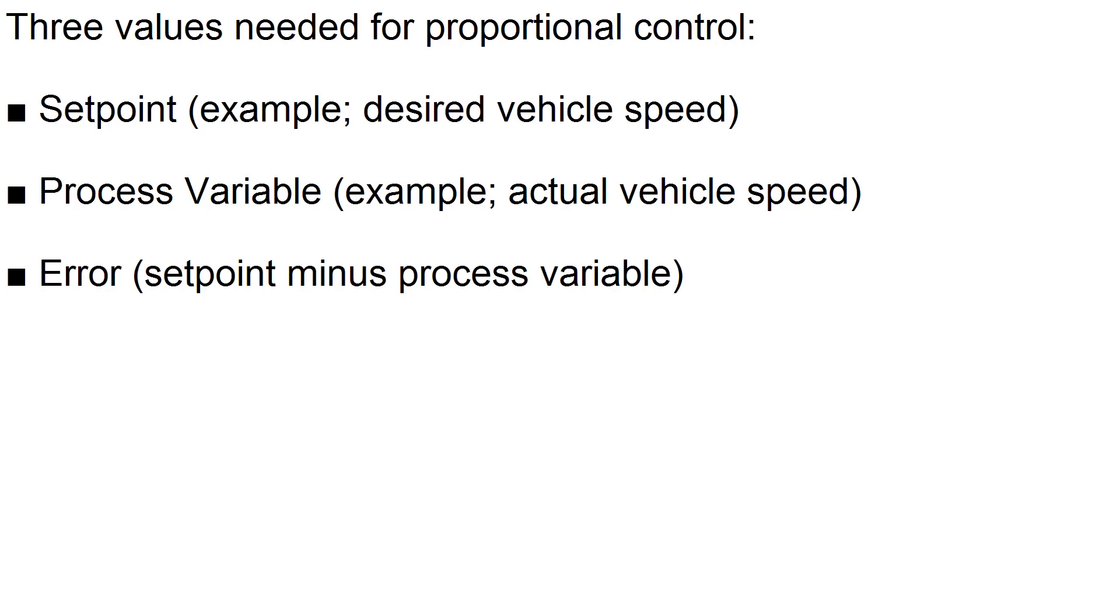So in order for proportional control to work, we really only need three things. We need something called the set point, and sticking with our cruise control example, the set point in this case would be how fast you actually want the car to travel. The next thing that we need is the process variable, and in this case that would be how fast the vehicle is actually traveling, and of course we need a sensor to actually detect this.